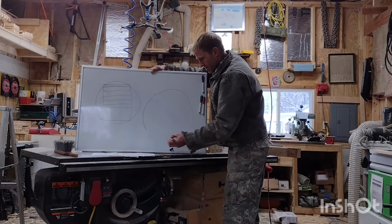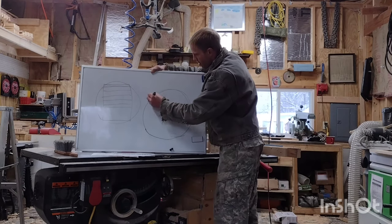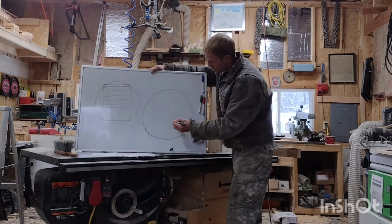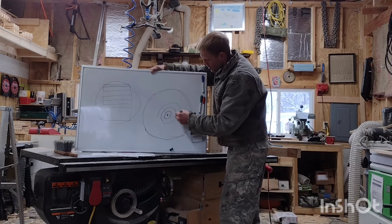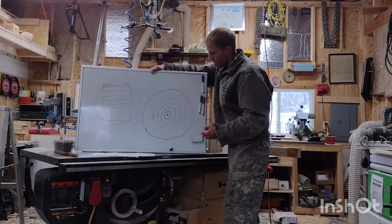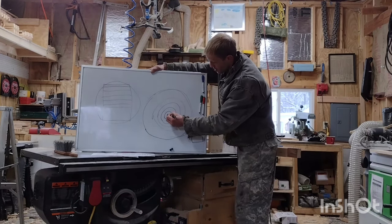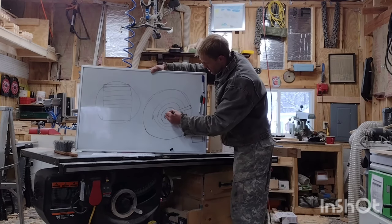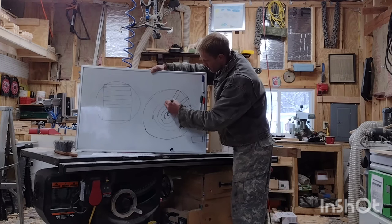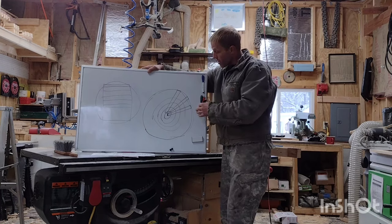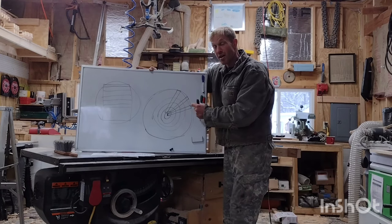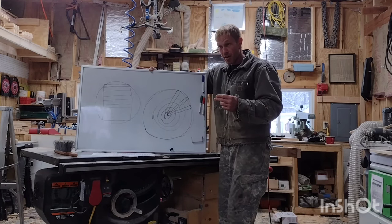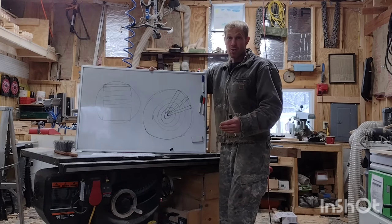Then you have rift sawn. You have your pith and your growth rings, and you rift saw that log in order to get edge grained boards — where you're going to have that grain between 60 and 90 degrees relative to the flat side of your board. Edge grained is commonly referred to as quarter sawn lumber.